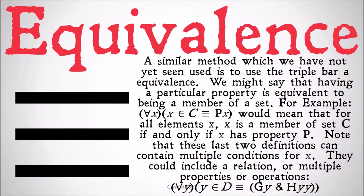Note that the last two definitions can contain multiple conditions for x — they can contain a relation, multiple properties, or operations. So we could say: for all y, y is a member of D if and only if y is a G and y bears the relation H to itself. You can throw in all sorts of logical statements into that, or into the statement with the bar dividing it in terms of a property. Depending on the author, you may see them use different versions of these, possibly for specific reasons. For now, we're going to treat them all pretty much as equivalent — just different ways to define what the members of a set are.